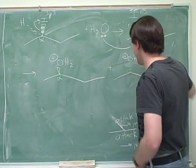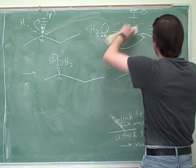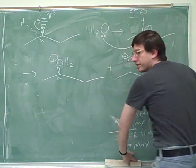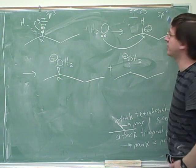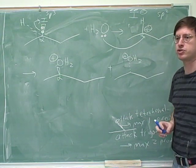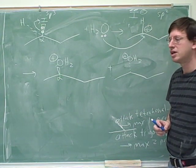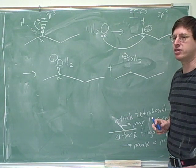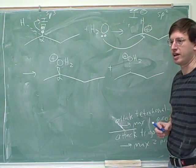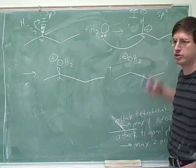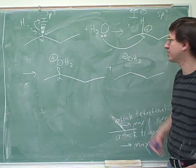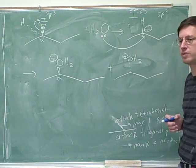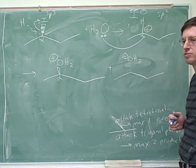But now this guy is attached to only three things, so it's sp2-hybridized, which makes it trigonal planar. Carbocations are so important in organic chemistry that eventually you should just have memorized that carbocations are sp2 and trigonal planar. But if you ever forgot that, you can figure it out — the carbocation is attached to three things, so it should be sp2 and trigonal planar.